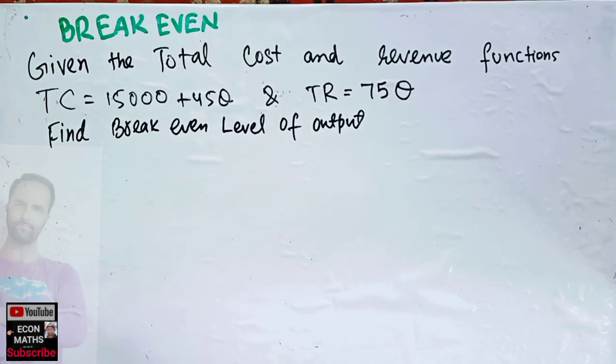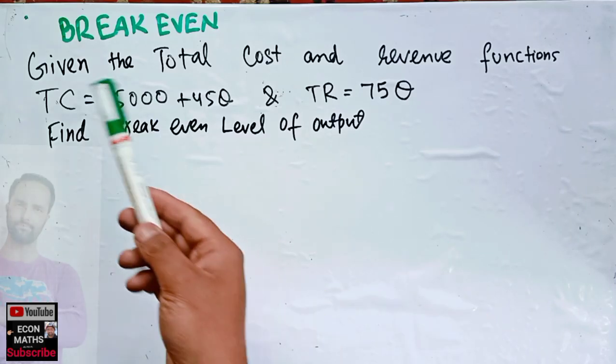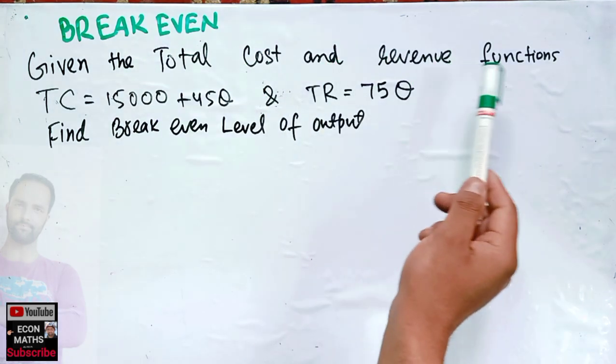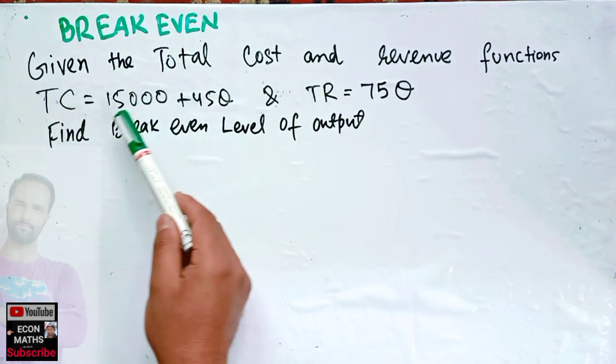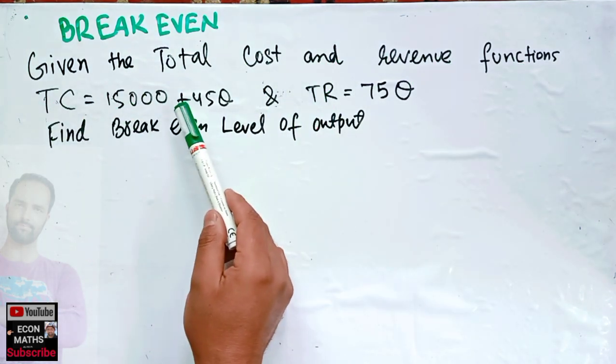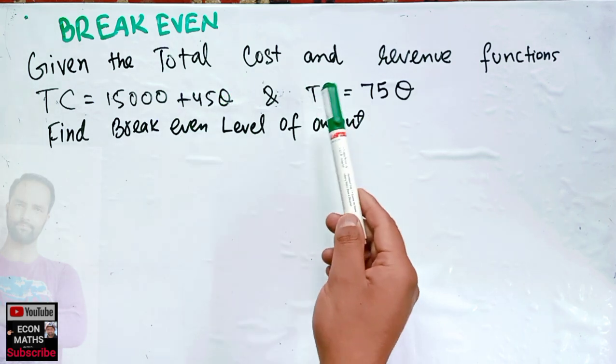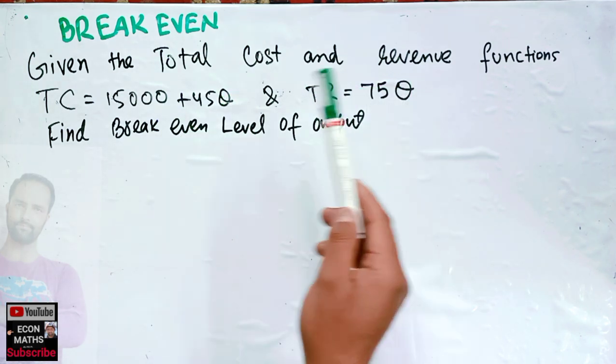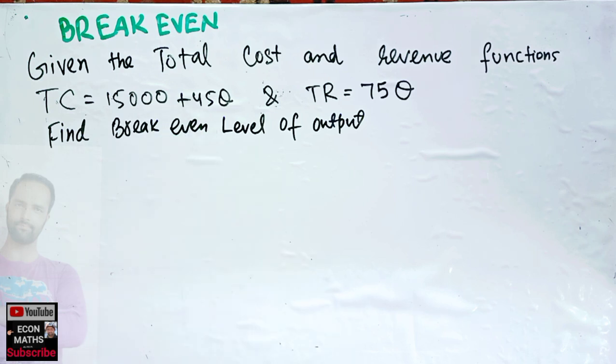In this video we will learn how to calculate break-even level of output. Given the total cost function TC = 15,000 + 45Q, where Q denotes the quantity, and total revenue function TR = 75Q, find the break-even level of output.